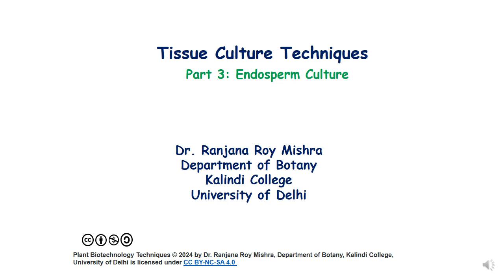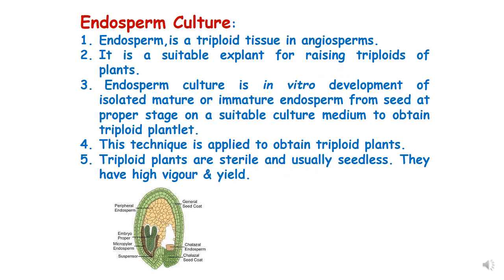In this lecture we will be discussing endosperm culture technique under tissue culture techniques. Endosperm is a triploid tissue found in angiosperms and is a suitable explant for raising triploid plants. Endosperm culture is a technique of in vitro development of isolated mature and immature endosperm from the seed at the proper stage on a suitable artificial culture medium.